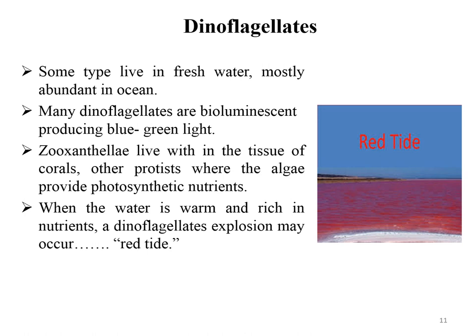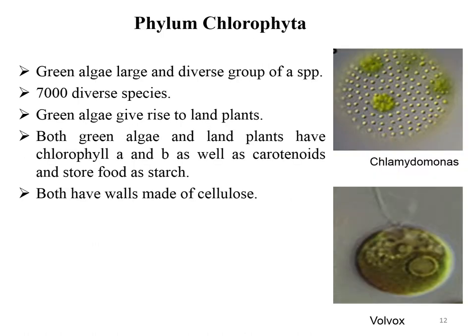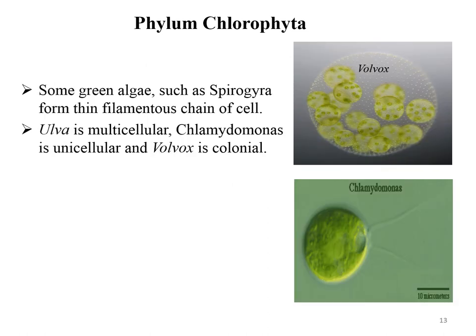Phylum Chlorophyta, also called green algae, are cosmopolitan in distribution and consist of about 7,000 diverse species. Green algae gave rise to land plants; both share chlorophyll a and b, carotenoids, and store food as starch, and both have cell walls made of cellulose. Some green algae such as Spirogyra form thin filamentous chains of cells; Ulva is a multicellular alga; and Chlamydomonas is unicellular and can form colonies.